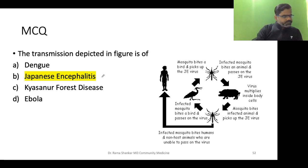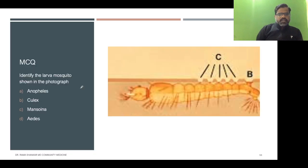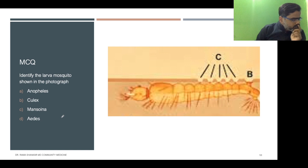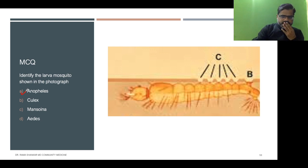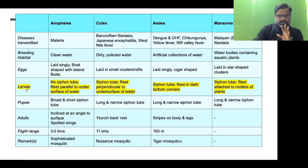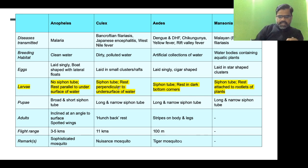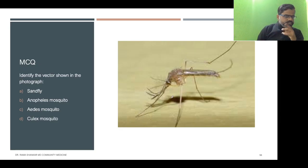Next question: identify the larvae shown in the photograph. Is it Anopheles, Culex, Mansonia, or Aedes? Daruni answered Anopheles — everyone agrees, and yes, absolutely correct. The larvae is Anopheles because it is resting parallel to the under-surface of water. That is the key differentiating point — Anopheles larva rests parallel. If it were perpendicular or oblique, it would be different. Before explaining further, let's identify the next mosquito.